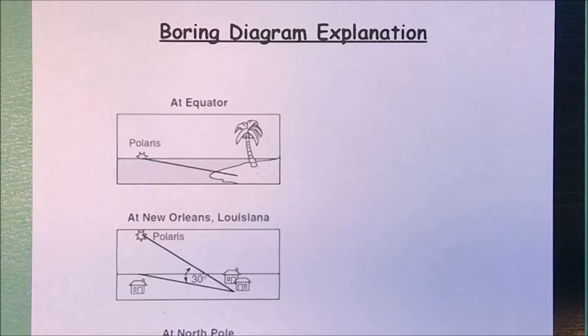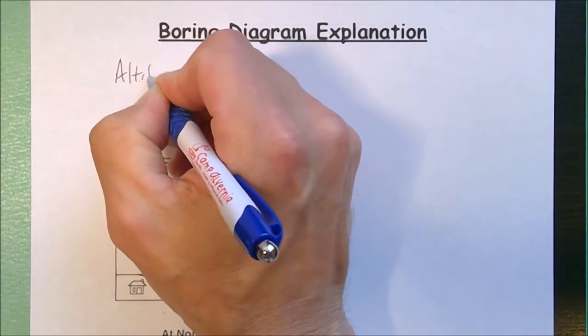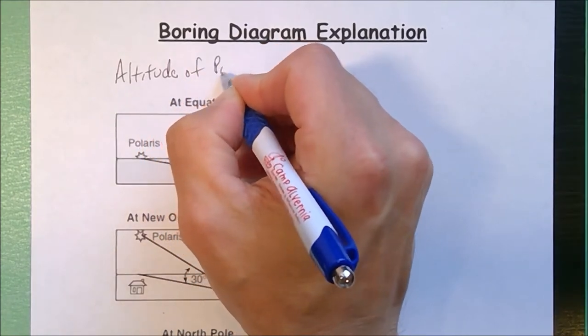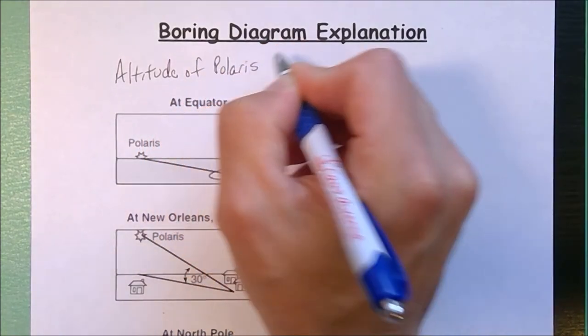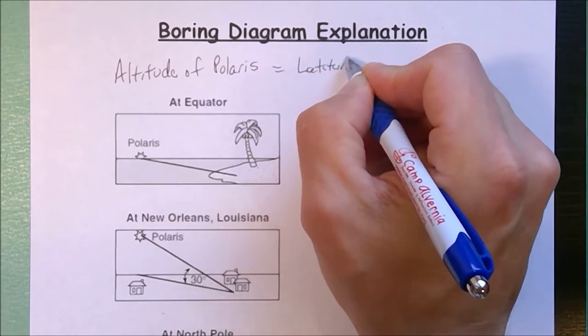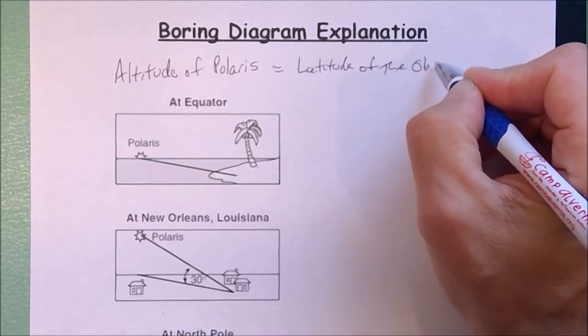Mr. Abbott here in time for another Boring Diagram Explanation. This one is Boring Diagram Explanation number 28. This is going over something that you see on every single Regents exam: the altitude of Polaris, which is the North Star, is equal to the latitude of the observer.